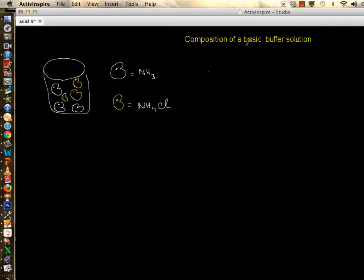One way to make a basic buffer solution, a buffer that has pH above 7, is by adding a weak base such as ammonia to the salt of the weak base such as ammonium chloride. Let's investigate why.